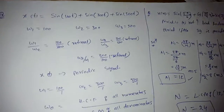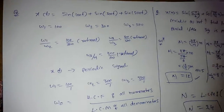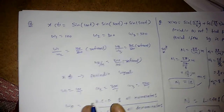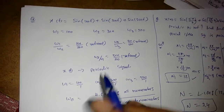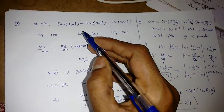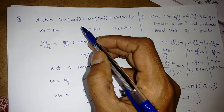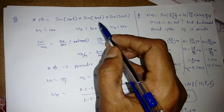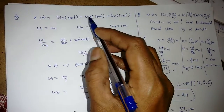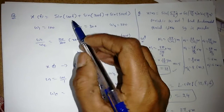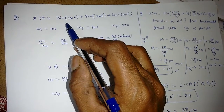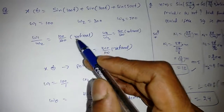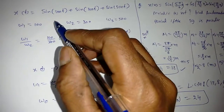This is a continuation of the previous lecture. We have seen what a periodic signal is and how to find the period. Now if we are given a summation of two or three signals, we will see how to find the fundamental frequency in both continuous and discrete cases.